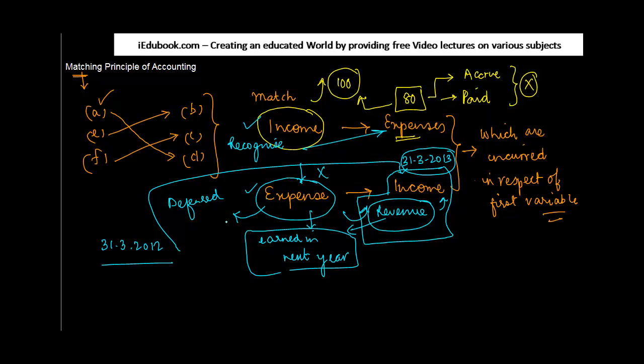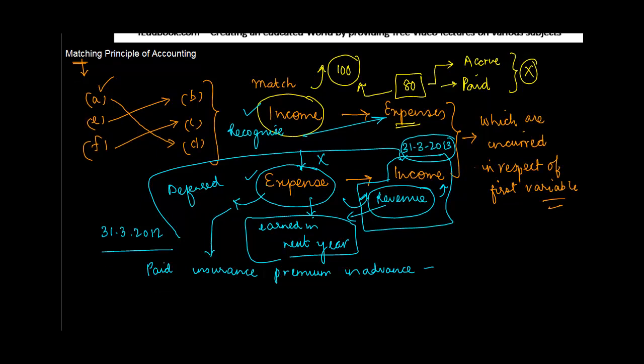For example, if you have paid insurance premium in advance, normally insurance premium is paid for a period of 12 months. Let's say someone paid insurance premium on 3-9-2011 and the validity of this is 3-9-2012.